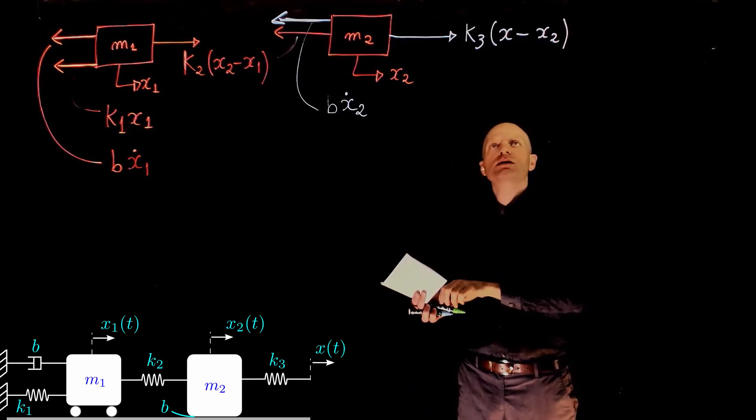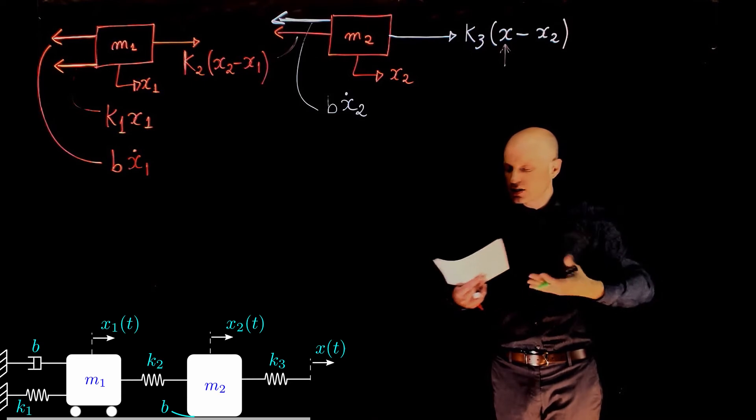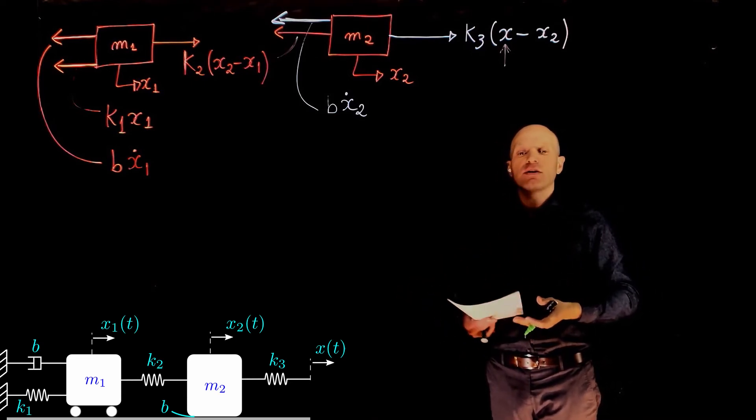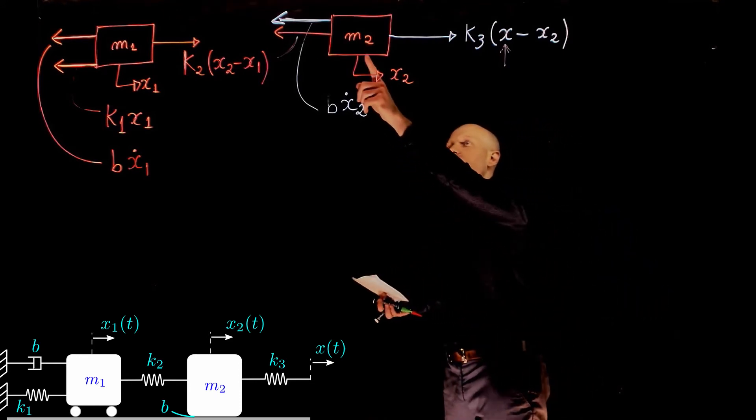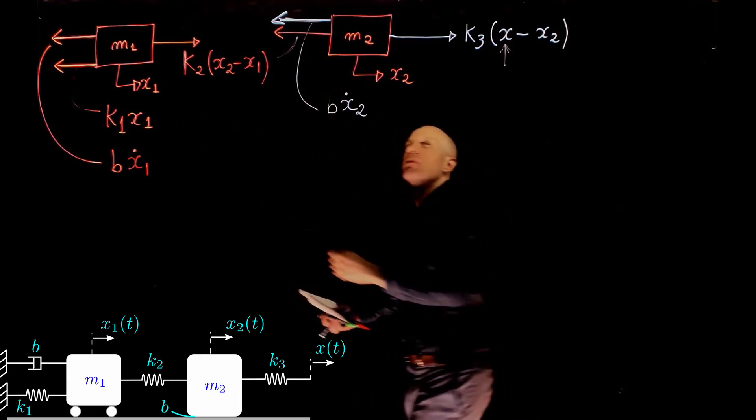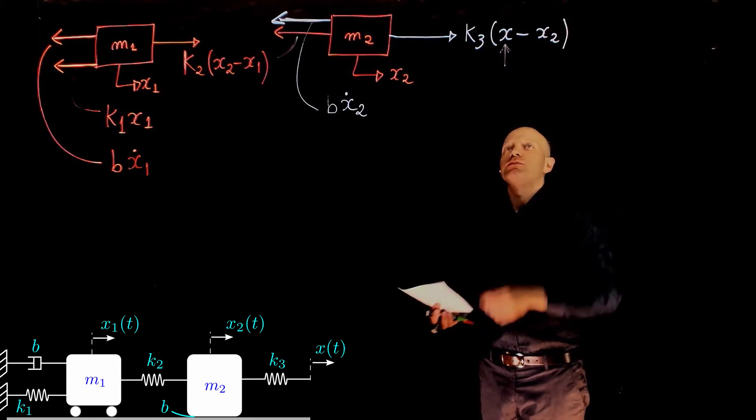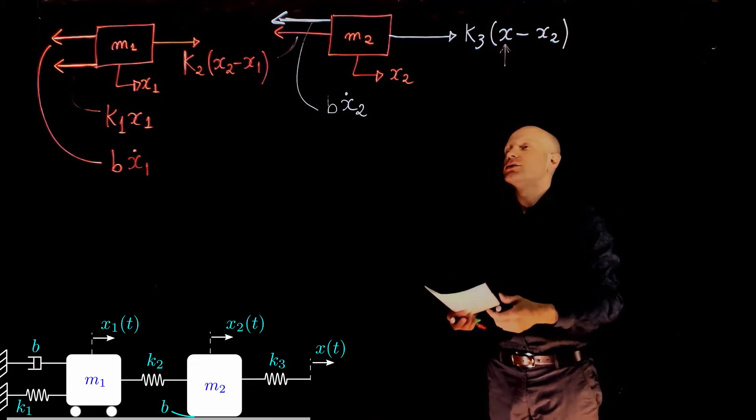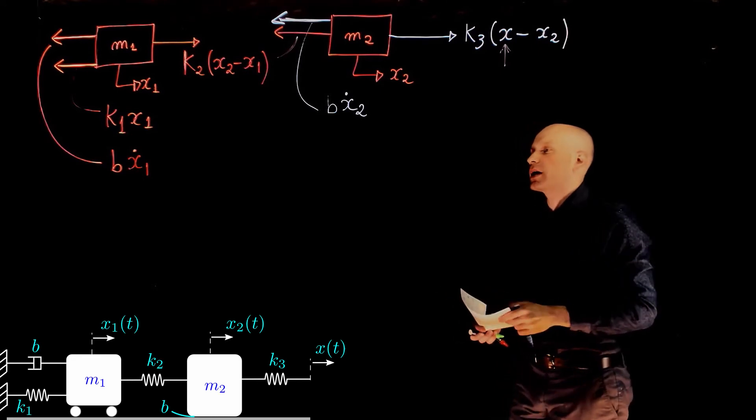We see x is the input to the system. It's a displacement, it's not a force. We cannot apply a force to a spring. The spring in this case is an ideal spring. It doesn't have any mass. We cannot apply a force to something that doesn't have a mass. We can only apply forces to m2 and m1. To a spring, we can apply a displacement on one end of that spring. In this case it's x, and the displacement of the other end is x2. Hence, the force that this spring applies to the mass is k3 times x minus x2.